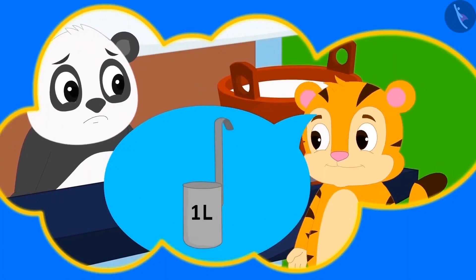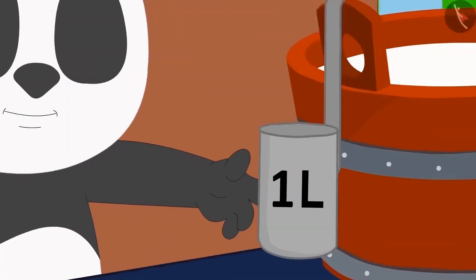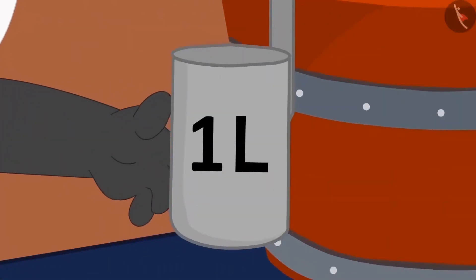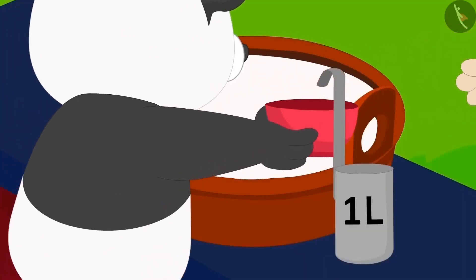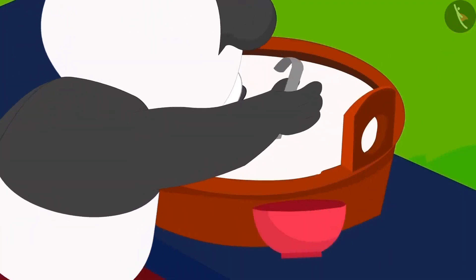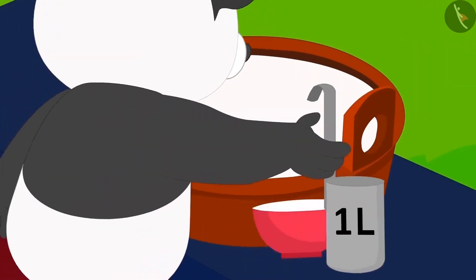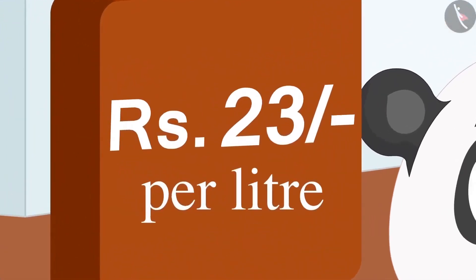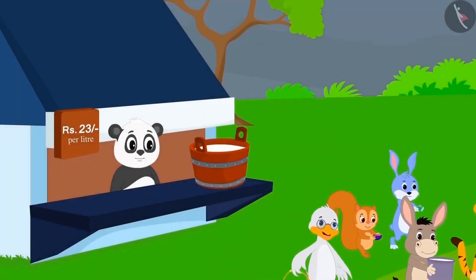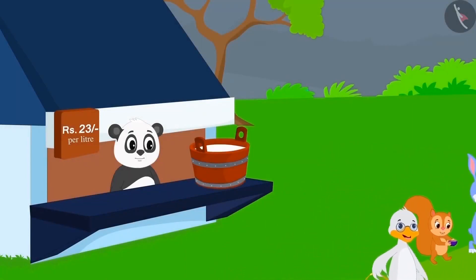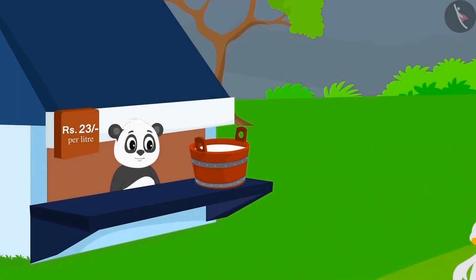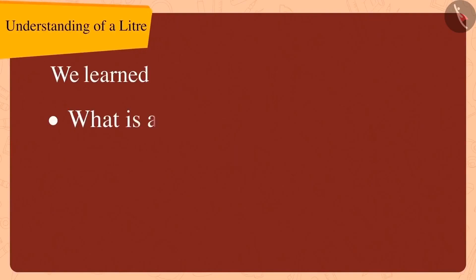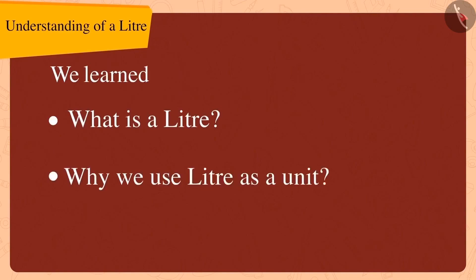When Shaykh Khan explained this to Golu, he immediately brought a litre measuring scale from the market. Now Golu started selling milk using this measuring scale and took money from everybody according to the amount of milk per litre. Golu sold milk to all the villagers and everyone happily went back to their respective homes. In this video, we learned what is a litre and why we use litre as a unit.